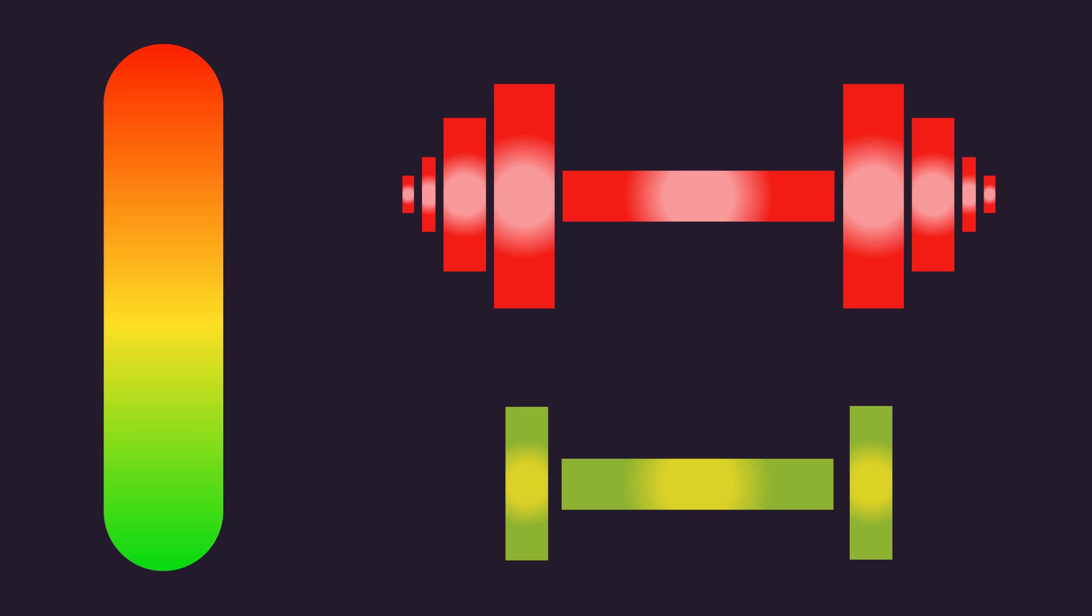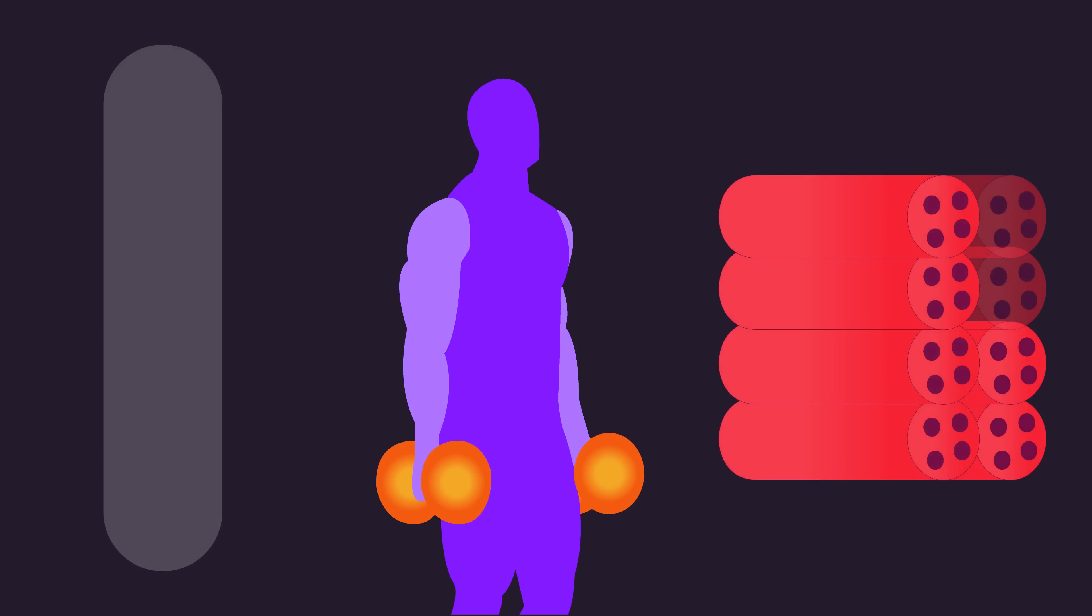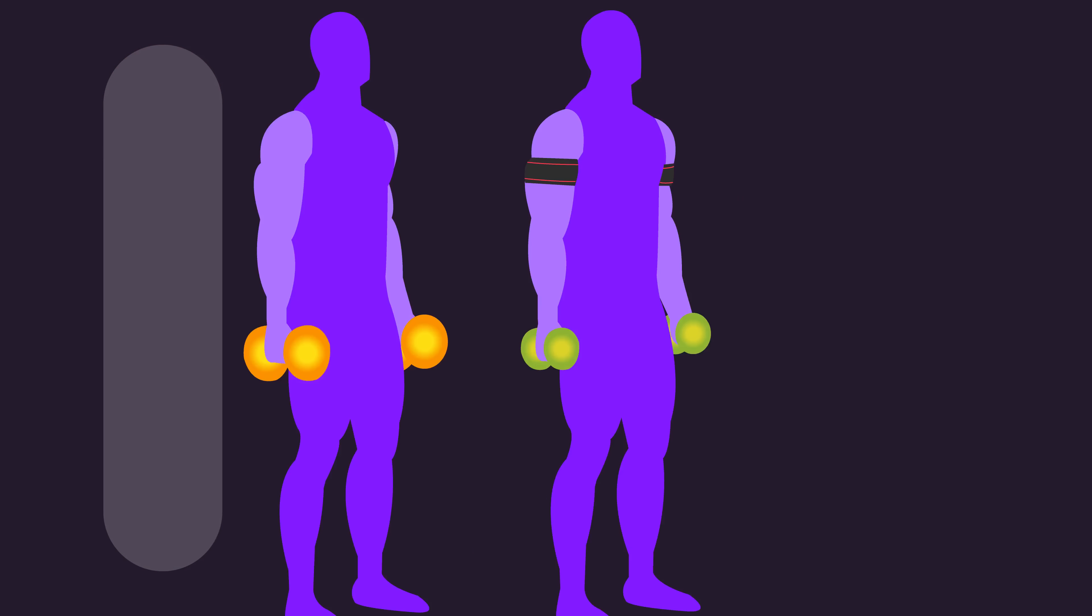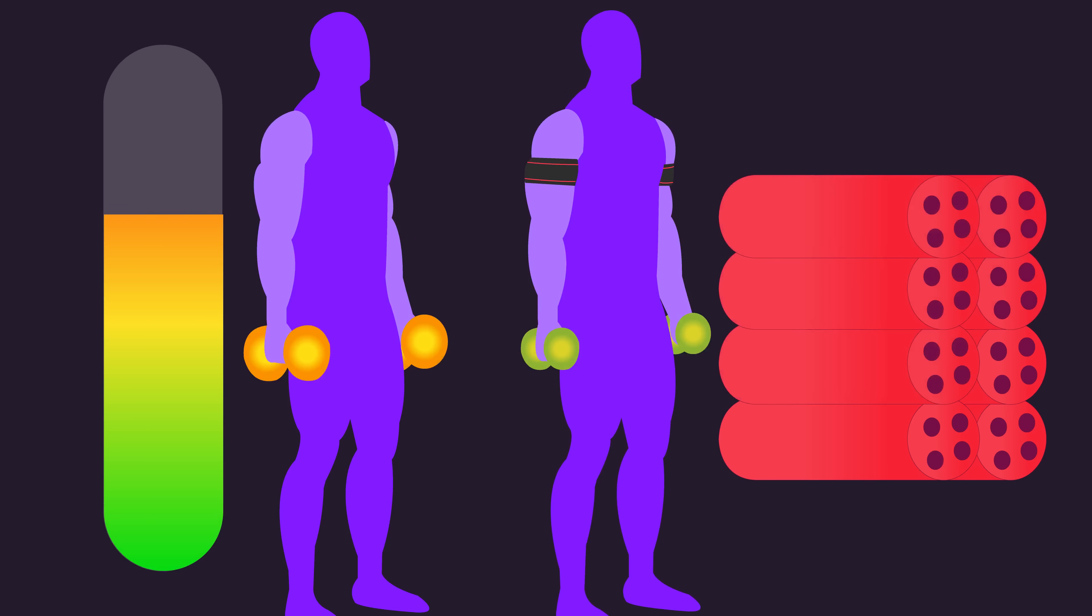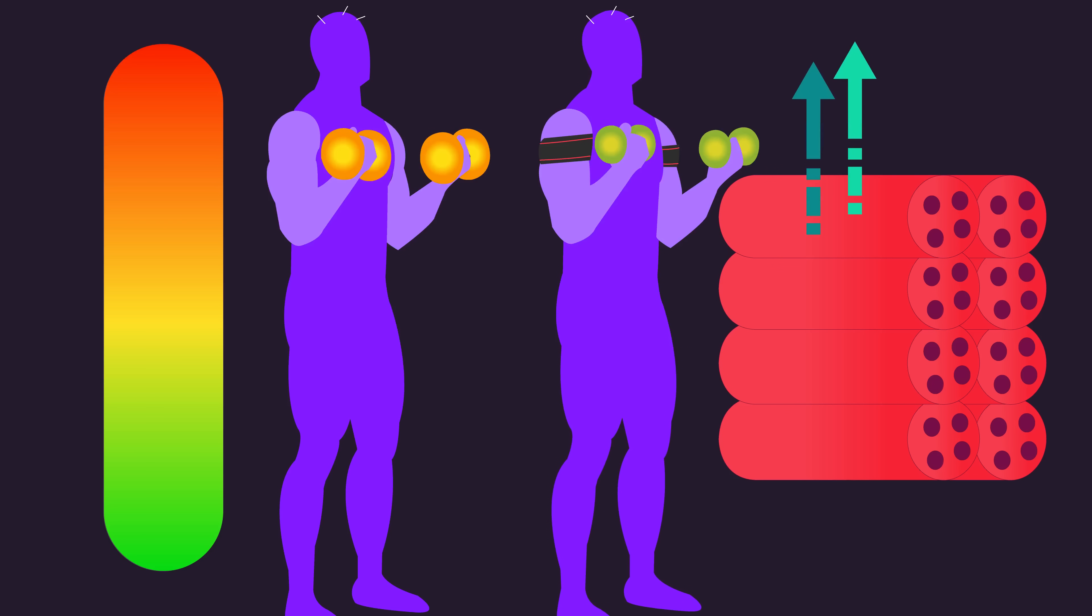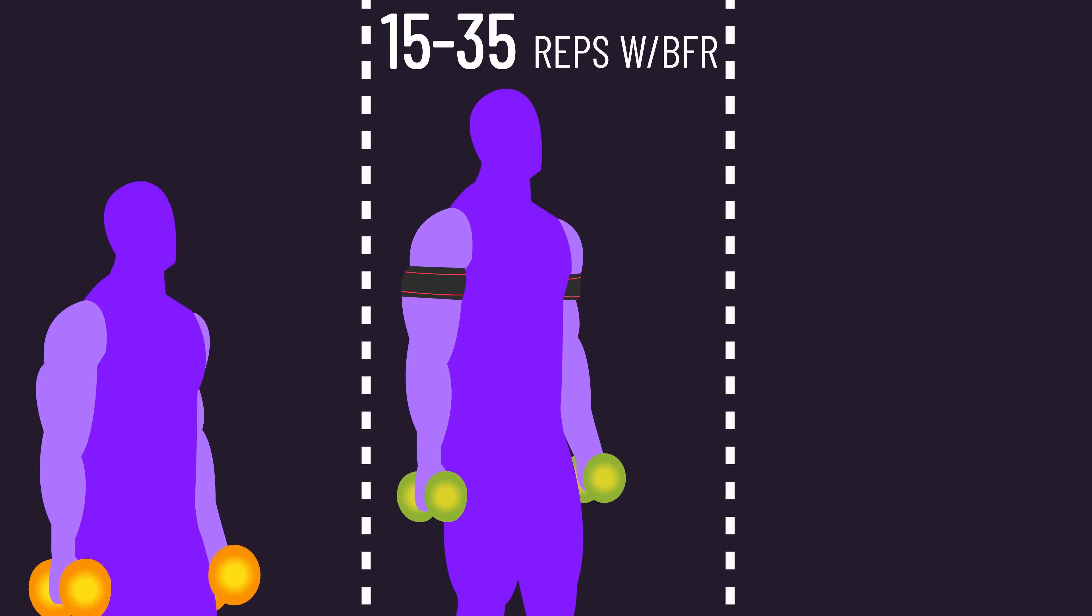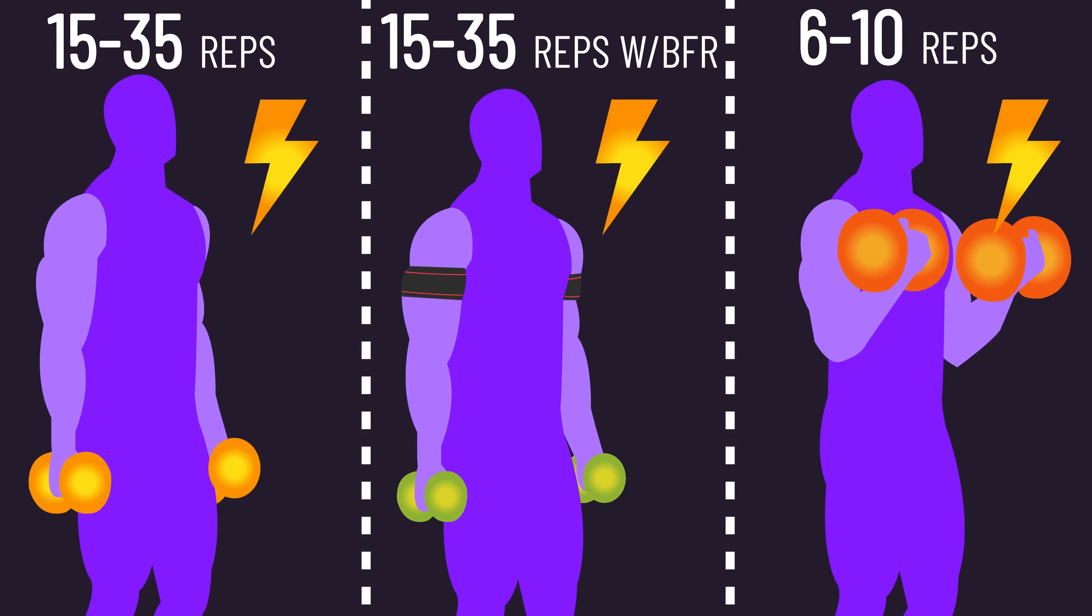Training to or close to failure accomplishes this, regardless of whether blood flow restriction, higher or lower reps are used. Lower reps with heavier loads will instantly involve high mechanical tension, and it only increases as you near failure. Higher reps and blood flow restriction initially involve low mechanical tension, but as you continue repping out and nearing failure, more muscle fibers are recruited and many fibers may increase their force contribution. Ultimately, overall mechanical tension ends up being comparable between these things.